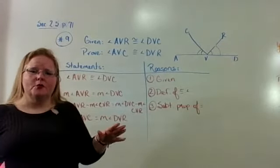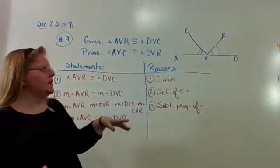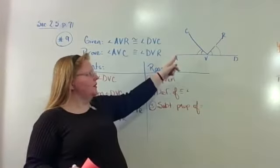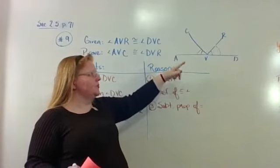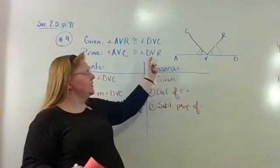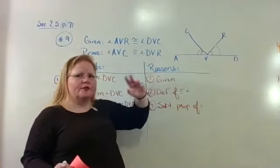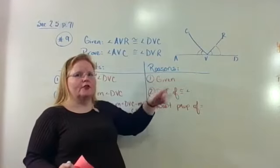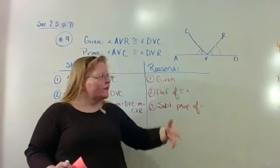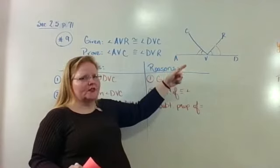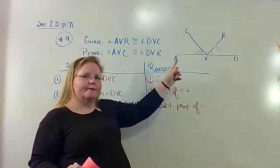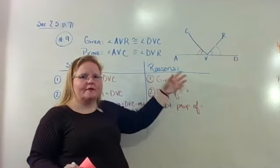So there are some people, I'm not one of those people, but there are some people who are nitpicky enough to say that you have to say, if you call it angle RVD but you mean DVR, there are some people who are nitpicky enough to say you're going to have to make another statement that says that angle RVD is congruent to angle DVR so that you could have it written that way.